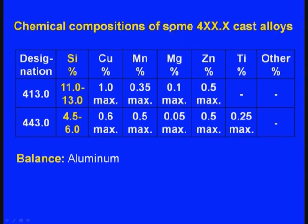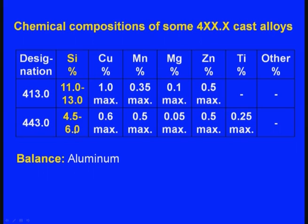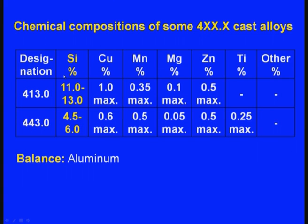In the chemical compositions of 4xx cast alloys: for 413.0, silicon is 11 to 13 percent, copper 1 percent maximum, manganese 0.35 percent maximum, magnesium 0.1 percent maximum, zinc 0.5 percent maximum, and titanium 0.25 percent maximum. In the 4xx series, silicon is the major alloying element and the balance is aluminum.